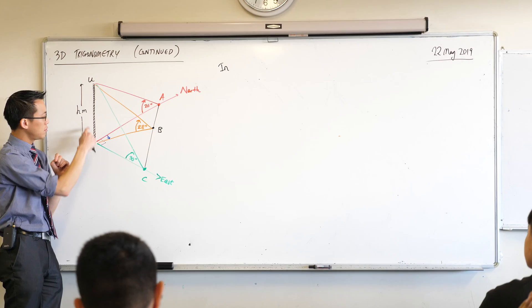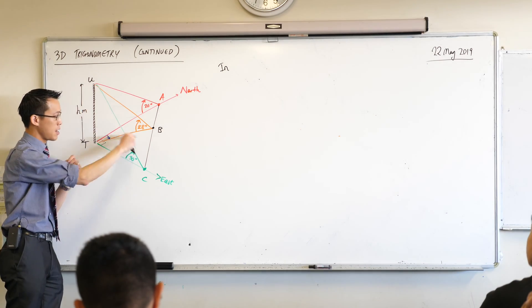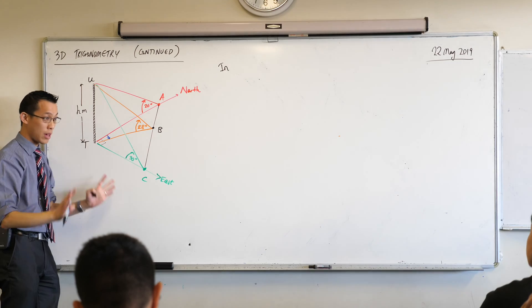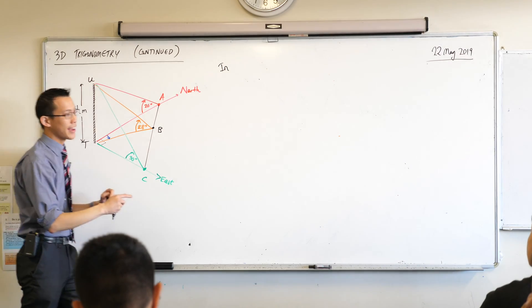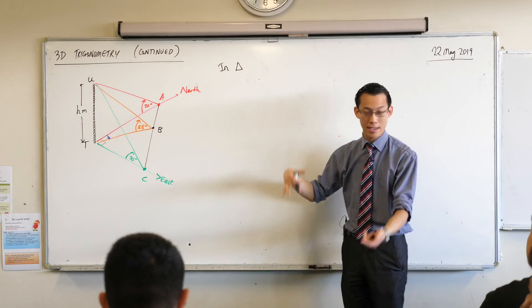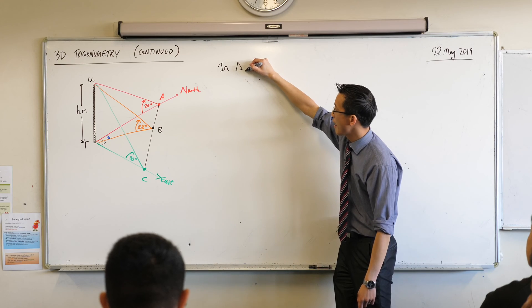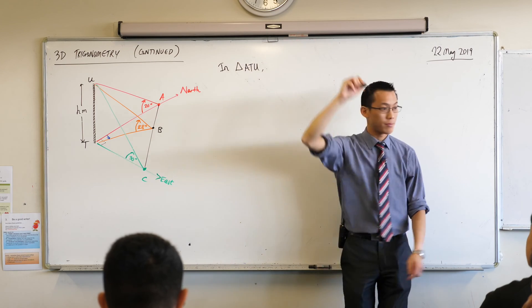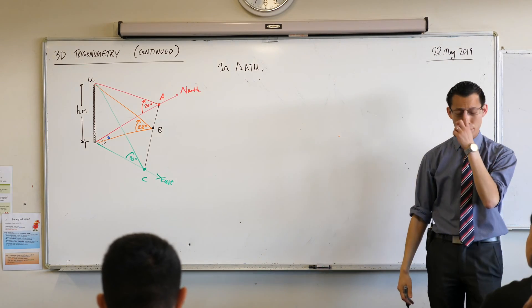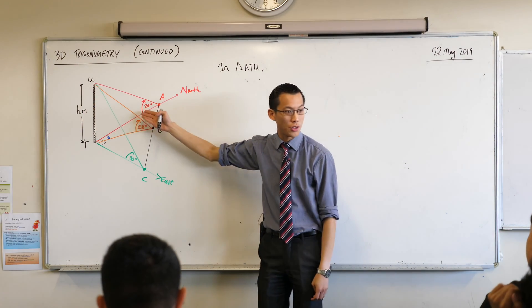So UTA 90 degrees. UTB. UTC. All 90 degrees, all right angles. So I can say for instance in triangle, I mean let's start from A I guess. A B and C then we'll do them in order. In the triangle which has A in it, ATU. I can use the fact that it's a right angle to connect this flagpole to something on the ground.